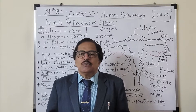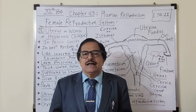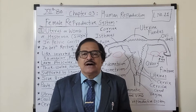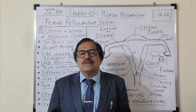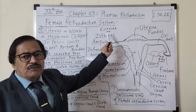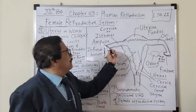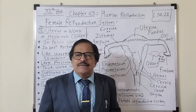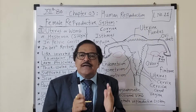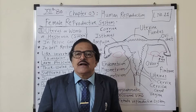We also discussed the structure of the oviducts or fallopian tubes, which have three important parts: infundibulum, ampulla, and isthmus. The isthmus is the part connected with the uterus.